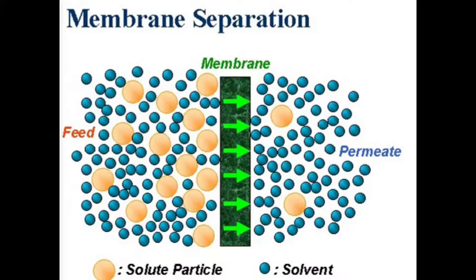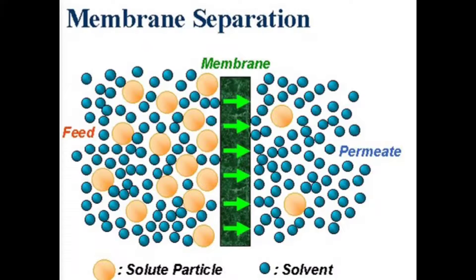In membrane separation, there is a solute particle and a solvent. Consider the solute particle as the impurity and the solvent as the water molecule. The process done by the membrane is to separate out the solid particles — the impurities — from the solvent particles. It only permits solvent molecules through this separation medium.